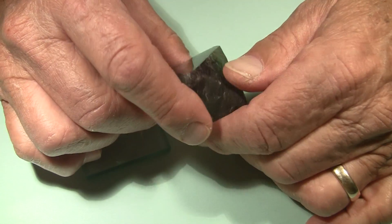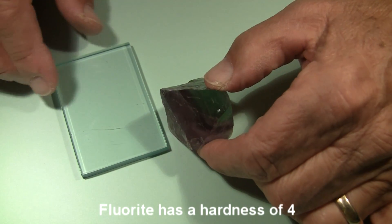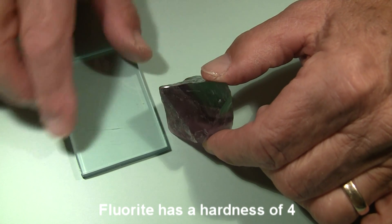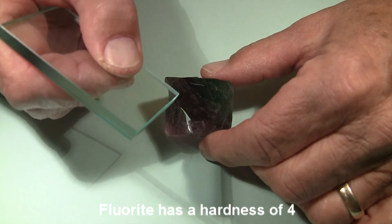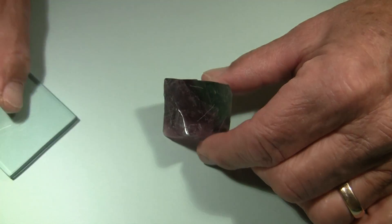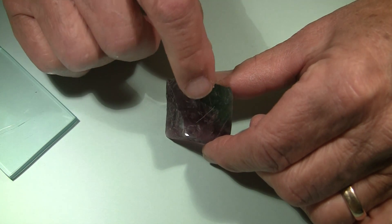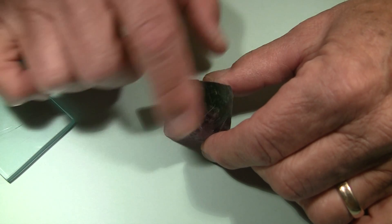I took the time to polish one of the faces here so I could test it more easily for hardness. This is the face here. I'll take the piece of glass, rub it across the surface, and see if it scratches it. Well, as you can see, it left a nice white line that is definitely a scratch.